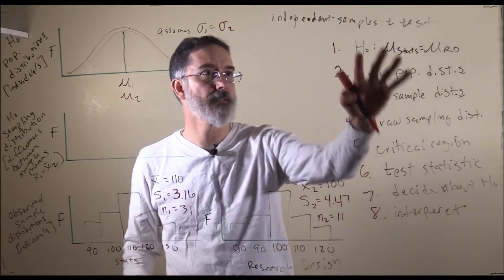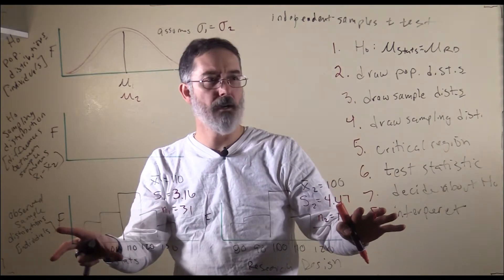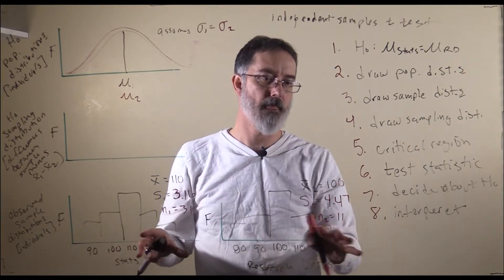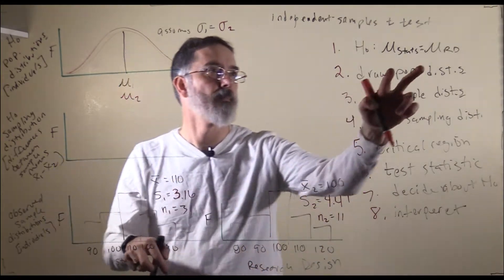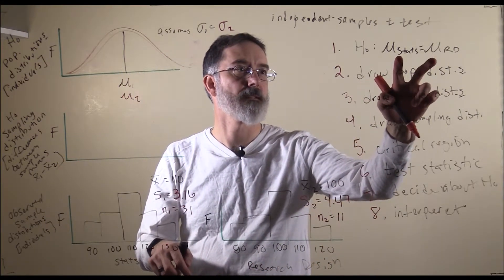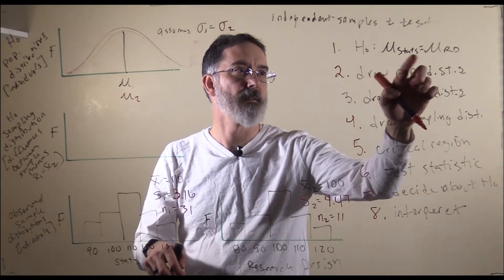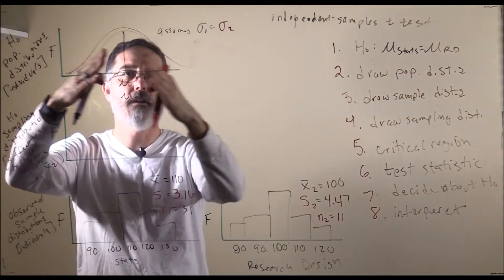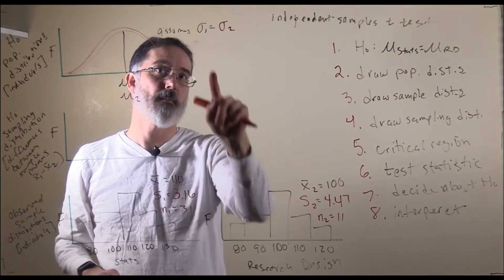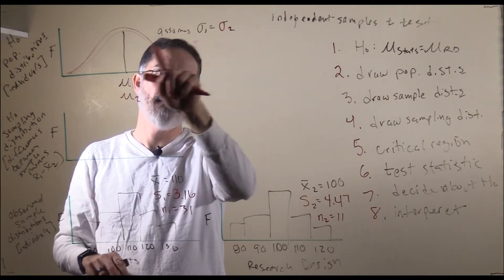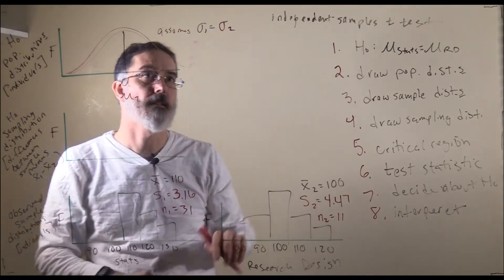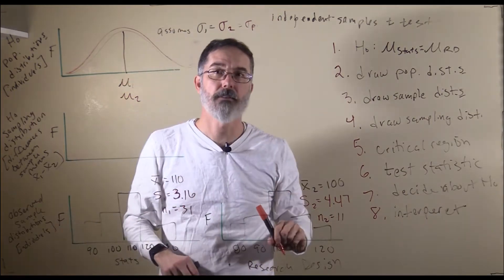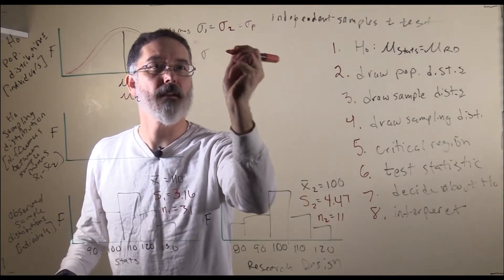I have written up all the different steps here and drawn the distributions as far as we can go before we have to worry about the difference in sample sizes. The null hypothesis says that the difficulty of the stats exam is the same as the difficulty for the research design exam. The independent samples t-test assumes that the standard deviations of the two distributions are the same, and we could call that the pooled standard deviation.